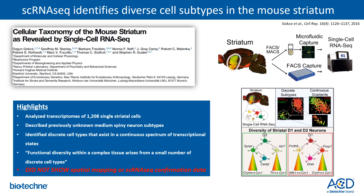What we wanted to do is show the incorporation of spatial mapping into the single-cell RNA sequencing workflow by adding confirmation and spatial mapping to an existing RNA sequencing project. We focused on a publication called 'Cellular Taxonomy of the Mouse Striatum as Revealed by Single-Cell RNA-Seq,' from Stephen Quake's lab in 2016. They analyzed transcriptomes of over 1,200 single striatal cells from the mouse striatum using microfluidic or FACS capture and single-cell RNA sequencing. The paper described previously unknown medium spiny neuronal subtypes and identified discrete cell types existing in a continuous spectrum of transcriptional states. However, while they nicely characterized the D1 and D2 neuronal subtypes, they did not show any confirmation or spatial mapping of these cell types — and so we wanted to add that to the story.